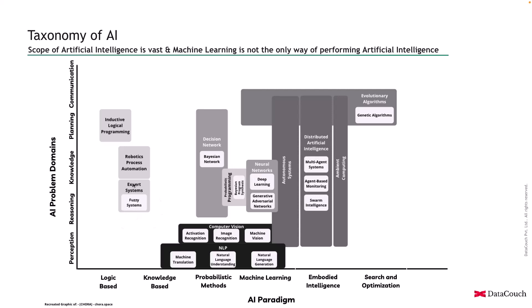Expert systems make use of fuzzy logic. Fuzzy logic goes beyond yes or no — it can have multiple states like certainly yes, not sure or maybe, certainly no, and possibly yes. These are different states in fuzzy systems.